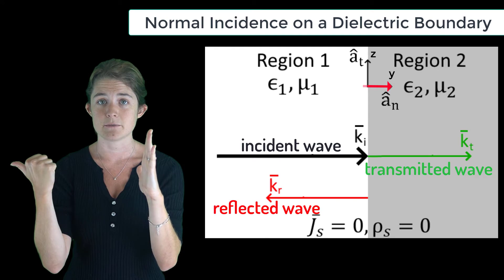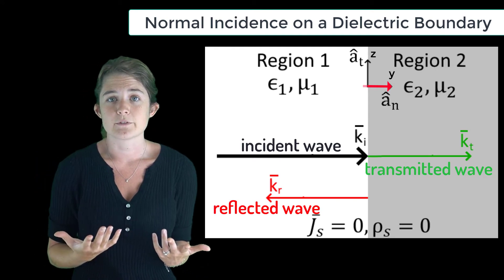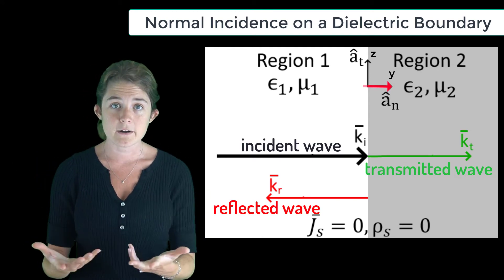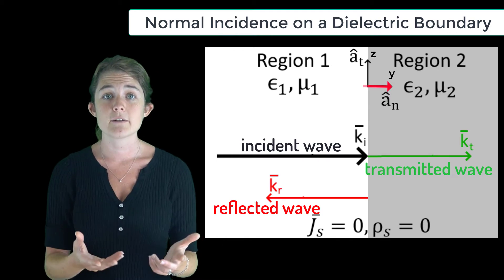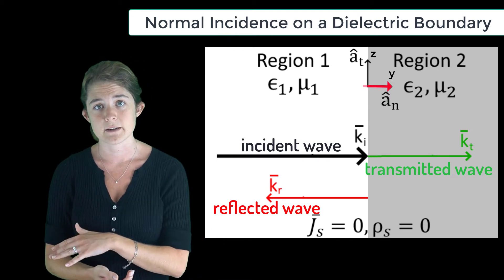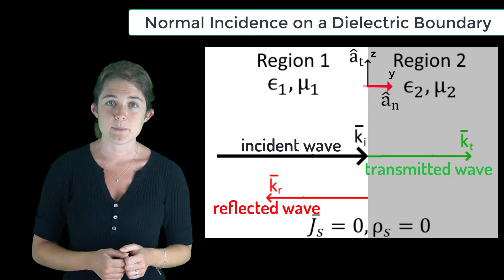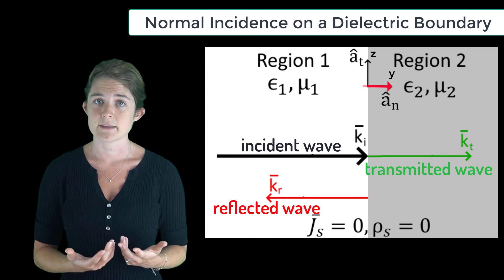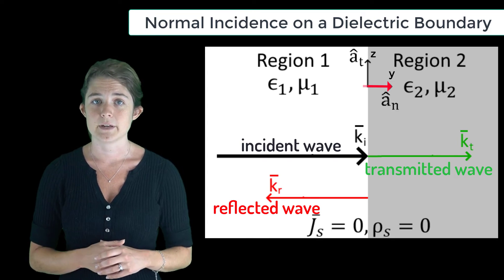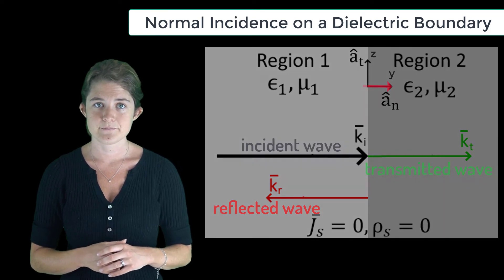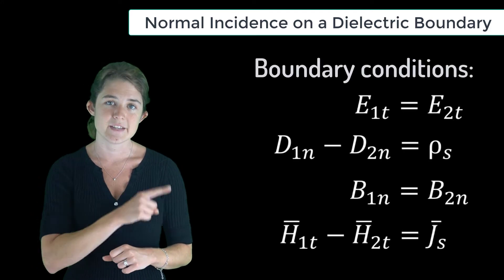As it turns out, most cases will result in part of the wave being transmitted into the second medium and part of the wave being reflected. In order to figure out how much of the energy follows each of these paths, we'll have to apply boundary conditions.